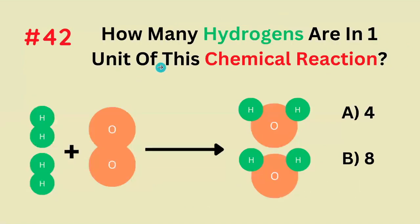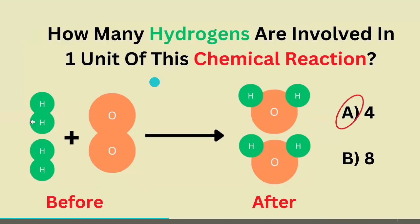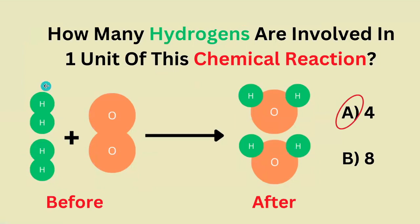How many hydrogens are in one unit of this chemical reaction? What we see here is one unit of a chemical reaction, and there are four hydrogens present. It's not eight, because these four hydrogens are the same four hydrogens that just happen to react and rearrange.